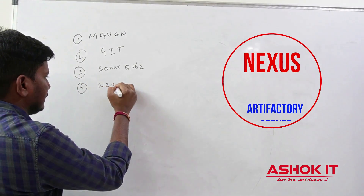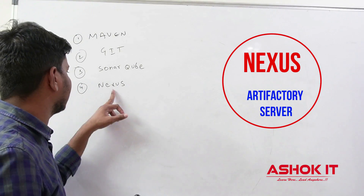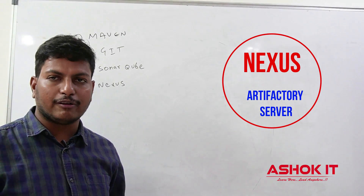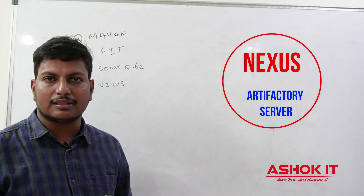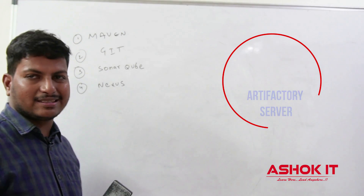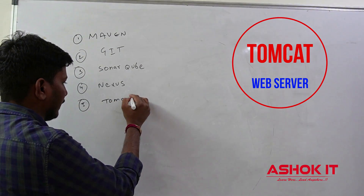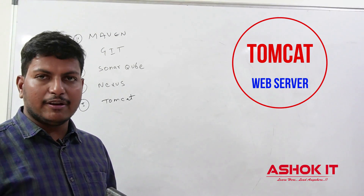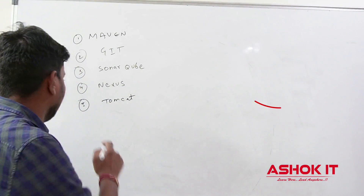Next one, Nexus. Nexus we are going to use as an artifactory server. Project build files we are going to store in the Nexus repository. When we compile and package our project by using Maven, it is going to generate a JAR file or WAR file. The JAR or WAR we can store in the Nexus repository. And for project shared libraries — some common libraries will be available for multiple projects — those shared libraries we can maintain in the Nexus repository. And the next one, we are going to use Apache Tomcat. Apache Tomcat is a web server which is used to run our Java web applications. Every web application will run inside a server.